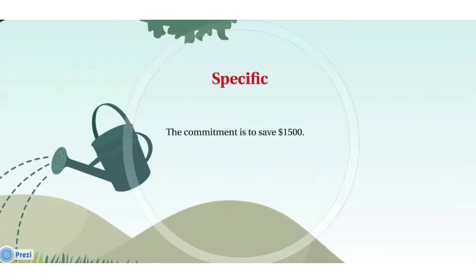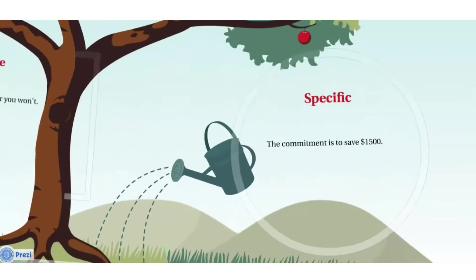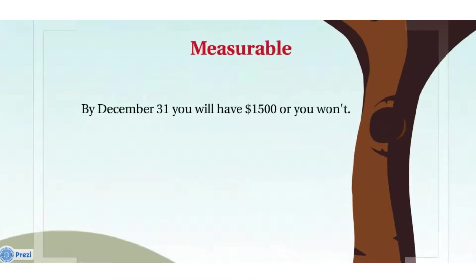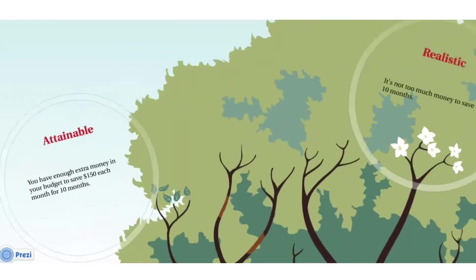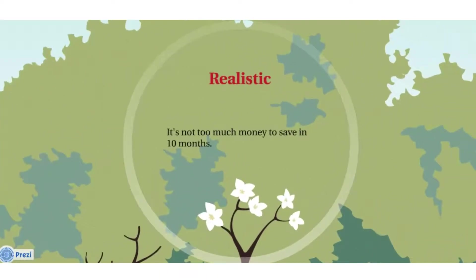So as we think about, can we measure it? Well, by December 31st, we'll either have $1,500 or we won't. And it is attainable. We know we have enough extra money in our budget after we've paid all our bills to save $150 each month for 10 months. And it's realistic. It's really not too much money. It's not like we're saying we want to save $100,000 in 10 months.